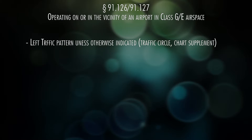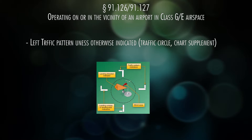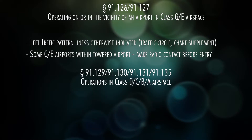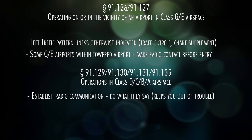91.126 and 91.127 can be summarized as follows. If you're coming in to land at an uncontrolled airport, make left traffic pattern unless otherwise indicated. Some Class G and E airports might be controlled by a control tower — in that case you have to establish radio communications before you get within 4 miles and 2,500 feet AGL. Anytime you fly into controlled airspace, establish radio communications with ATC and do what they tell you. And if you're going into Class A airspace, you better be IFR certified and equipped.